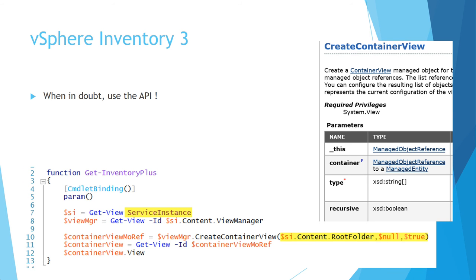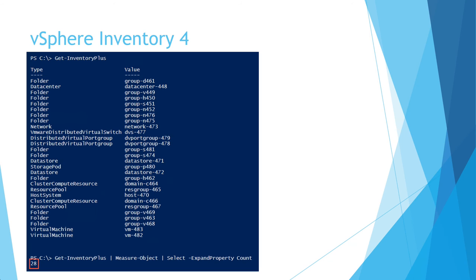If we run this, we get a more complete inventory. Most of the stuff from get-inventory comes back, but now we have a complete view. Remember it was 22 objects previously with the commandlet — now we have 28. We also see stuff like DVS, DV port groups, and datastore clusters. So we now have a complete view of our vSphere environment.